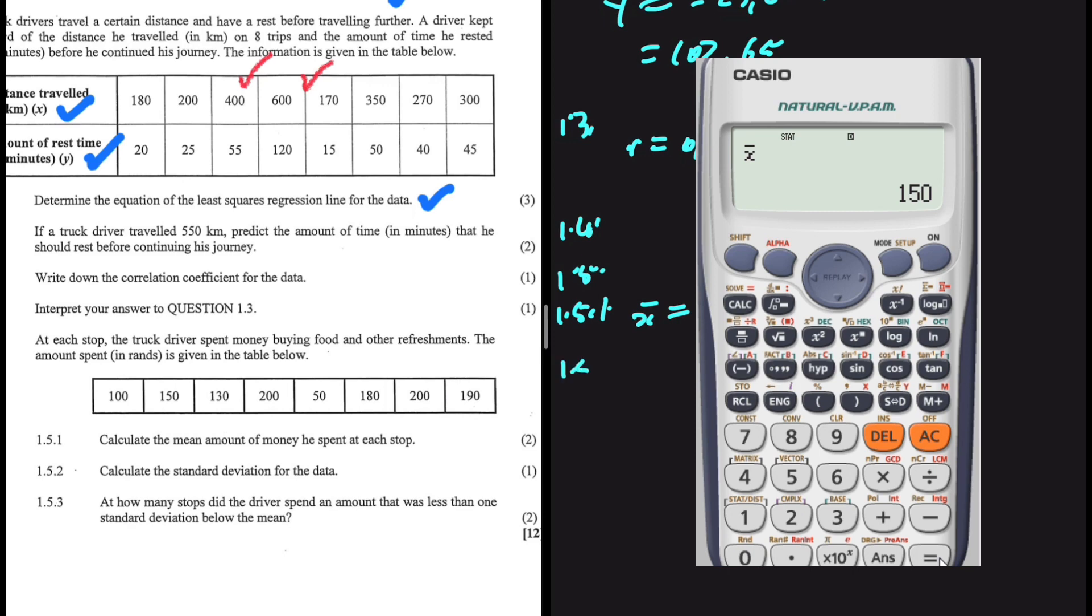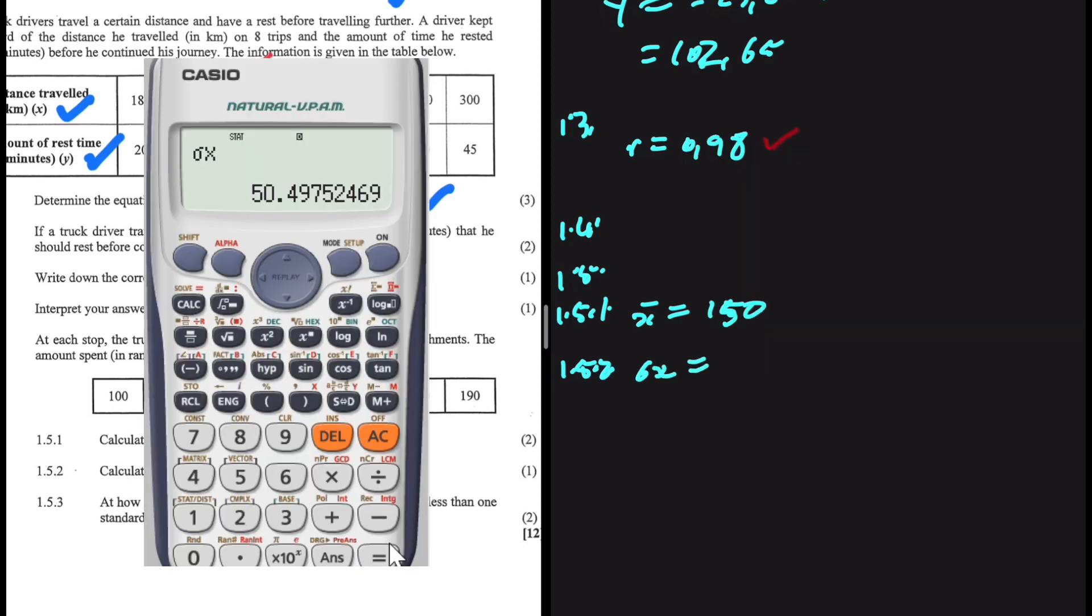You can say otherwise if that is not the case in the comments. And 1.5.2, calculate the standard deviation for the data. So Shift 1, 4, obviously. And then we press 3. That is the sign for standard deviation. So the standard deviation is 50.497. So 50.5. That's our standard deviation.